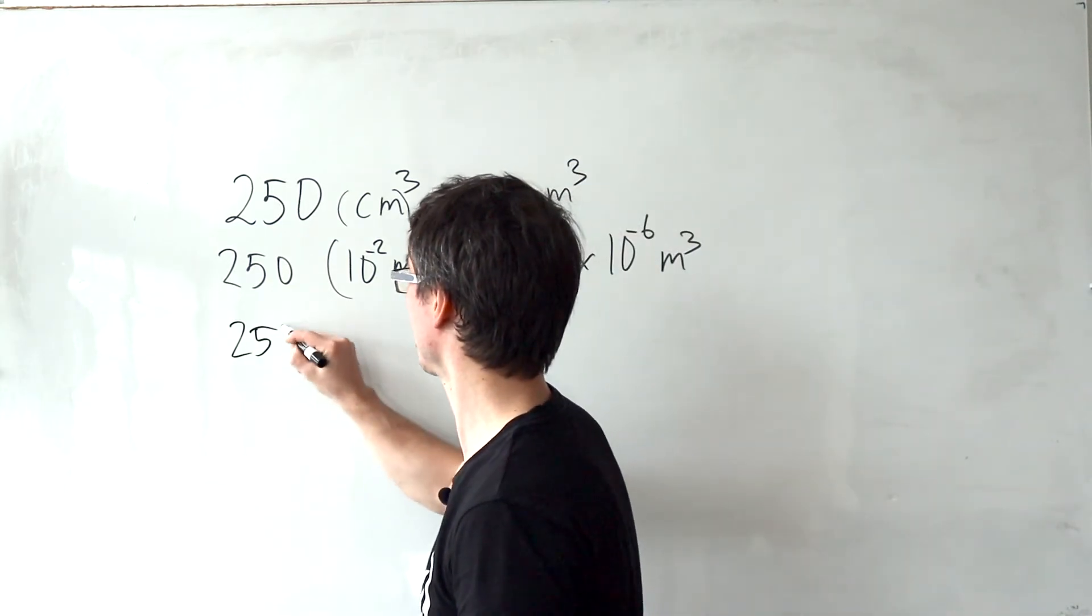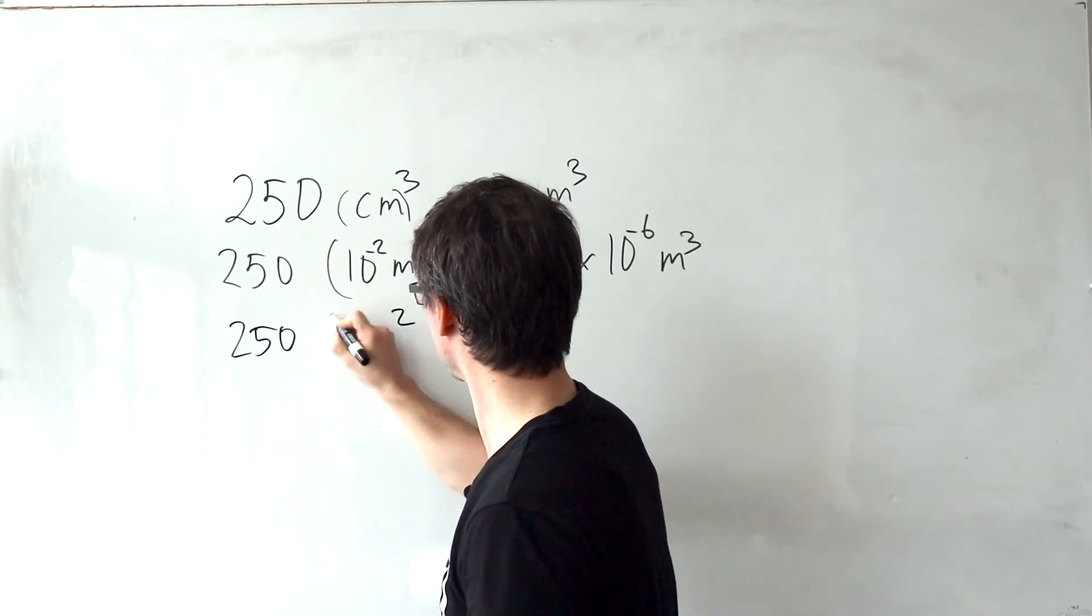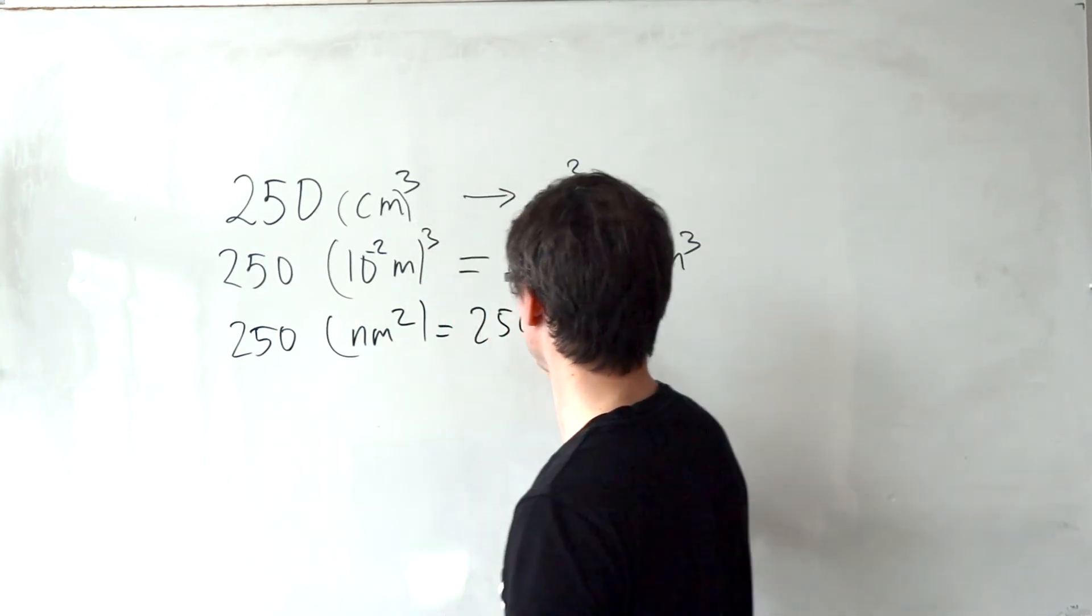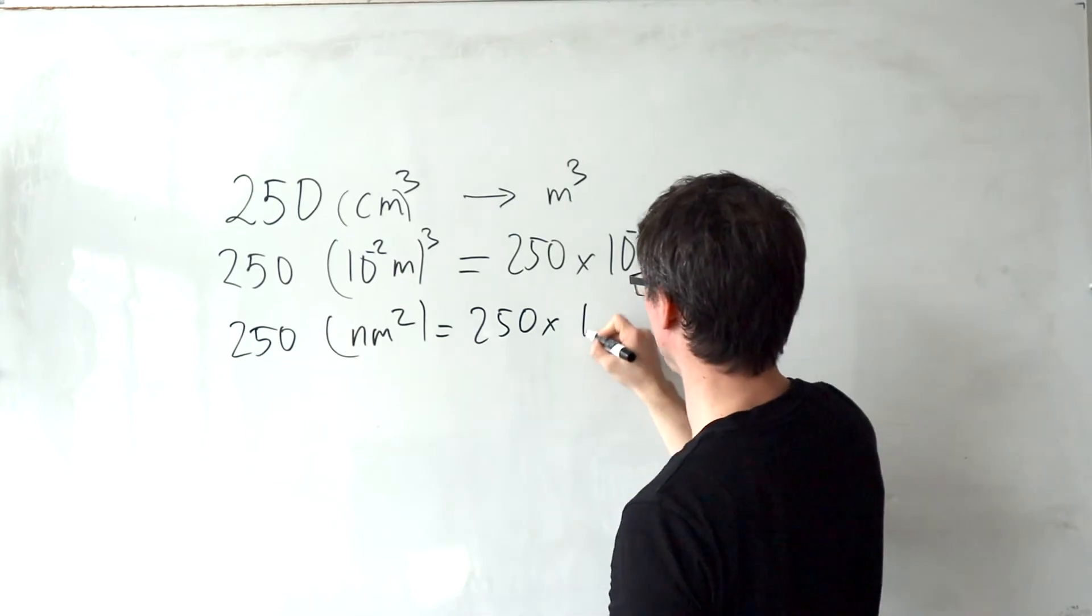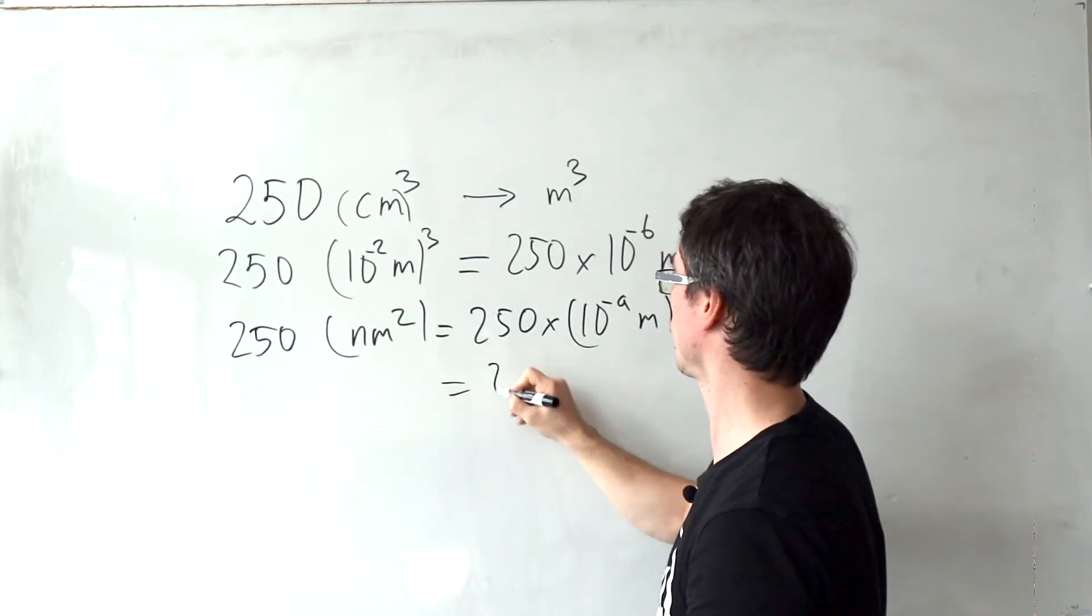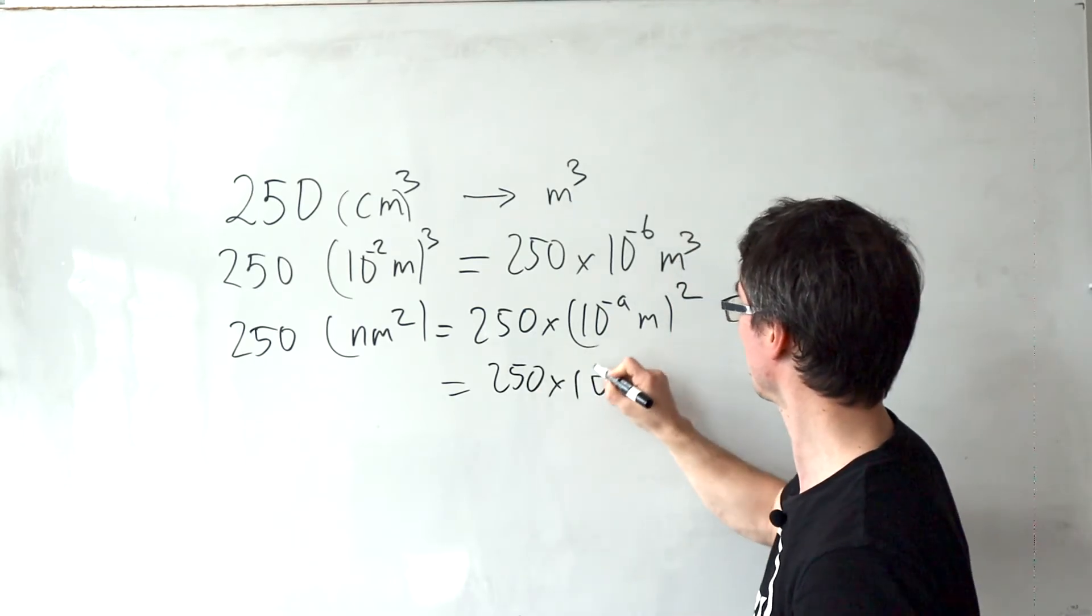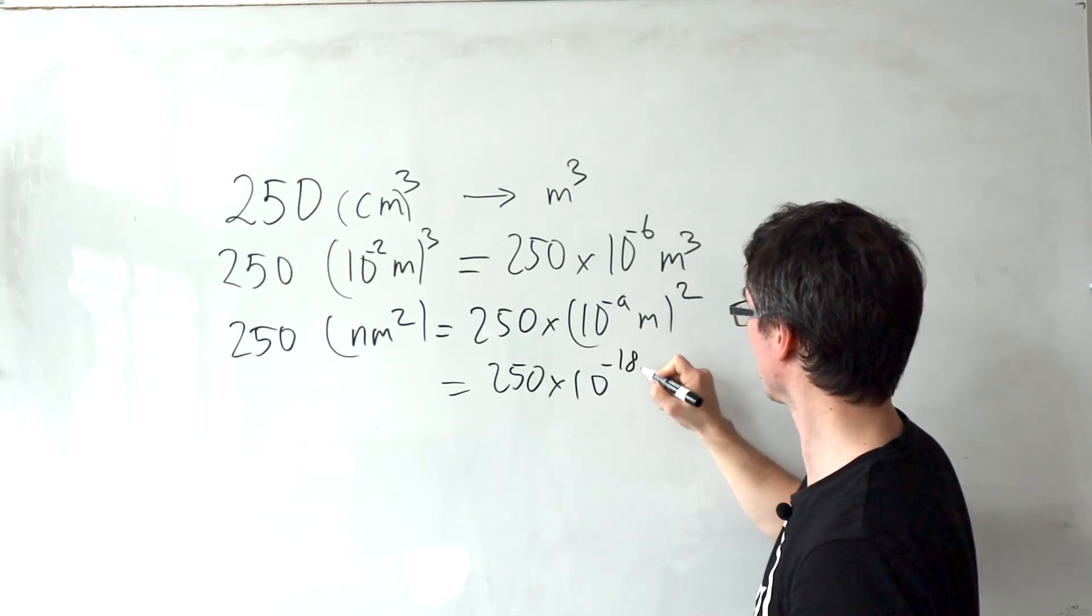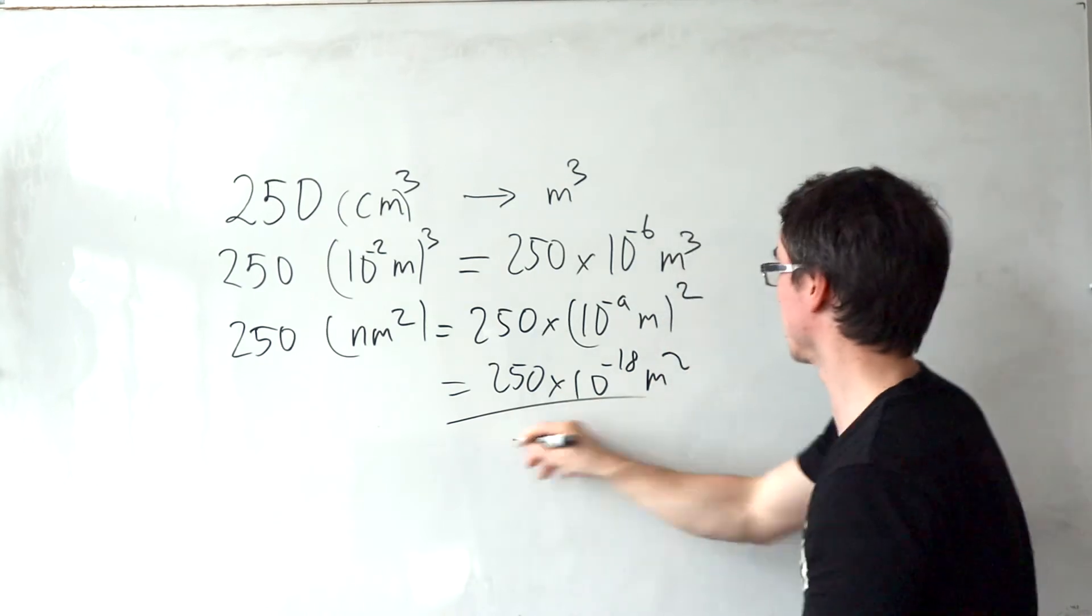With this method, you could really easily find a conversion factor of any prefix that you like. For instance, if I had 250, I don't know, nanometers squared, then this will be equal to 250 times nano is 10 to the power of minus nine meters squared, which is 250 times 10 to the power of minus 18 meters squared.